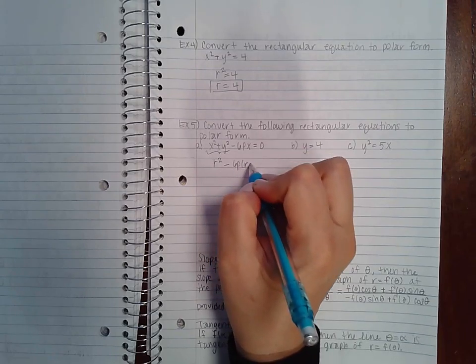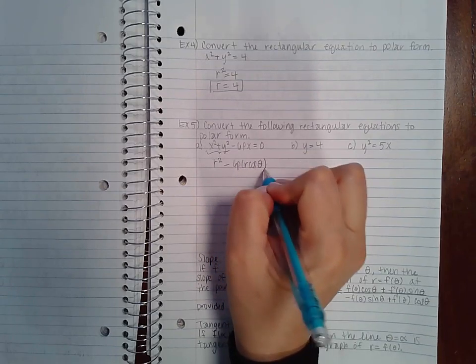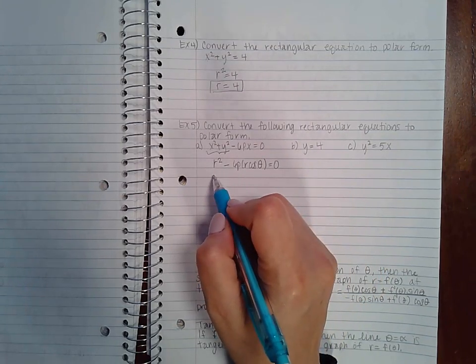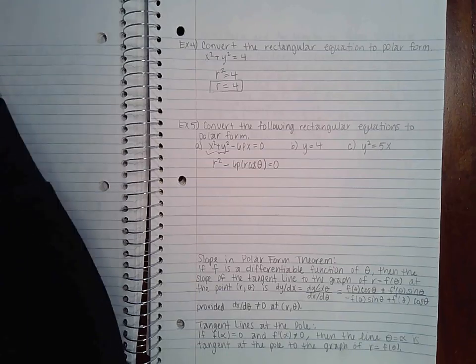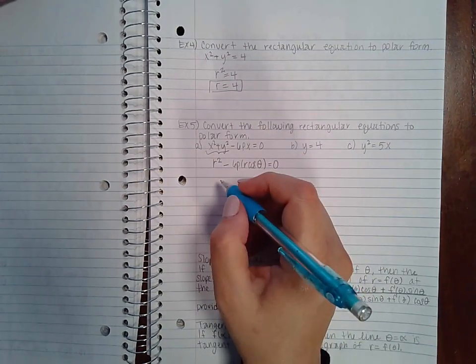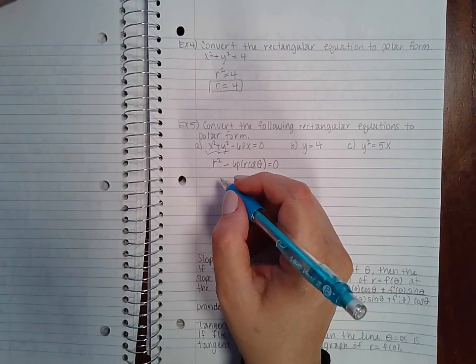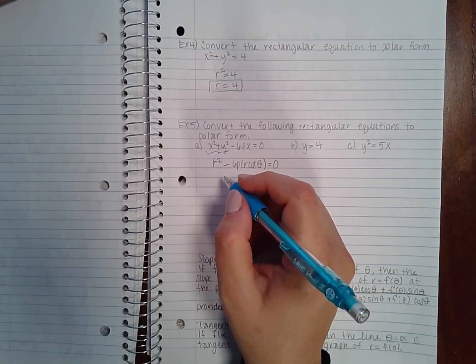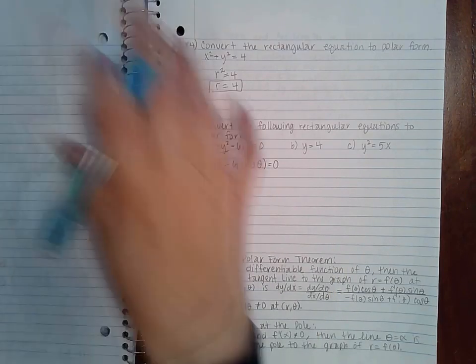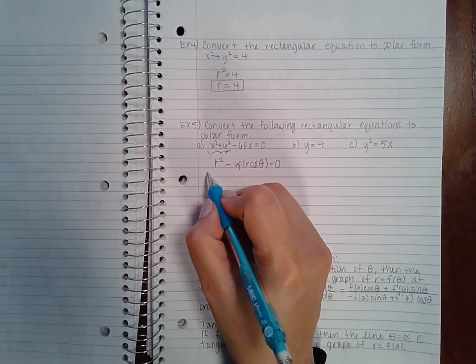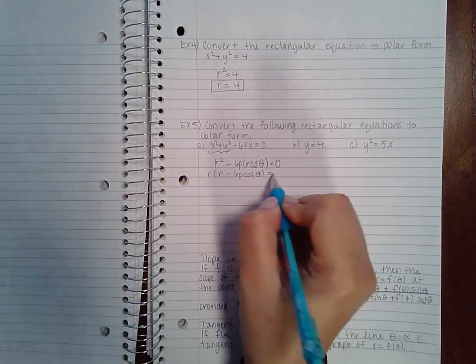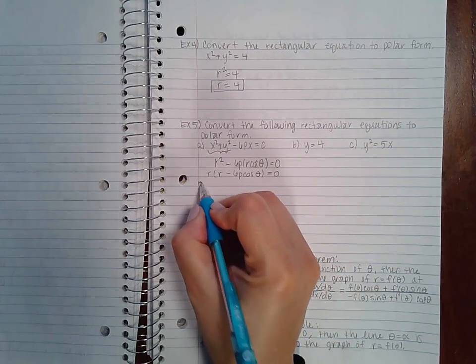And so then I can solve for r. We can take out an r: r minus 6 cosine theta. And so you could take r equal to zero.